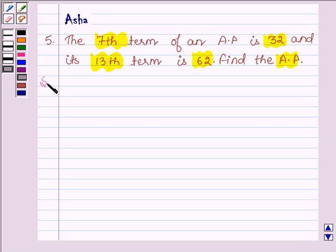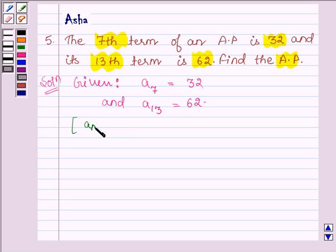Let's begin with the solution. Here we are given that the 7th term, which is denoted by A7, is 32 and the 13th term is equal to 62. Now, AN is equal to A plus (N minus 1) into D, where A is the first term and D is the common difference.